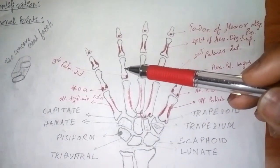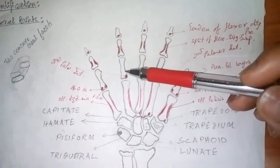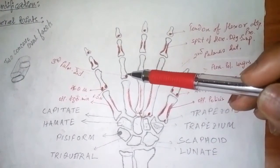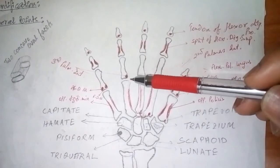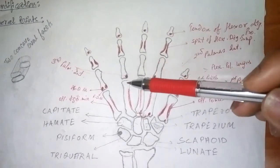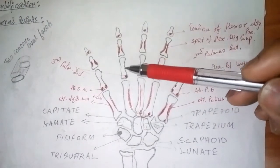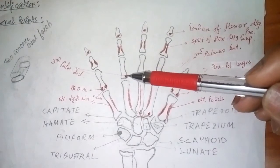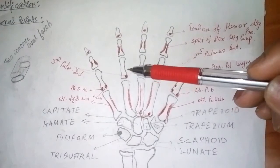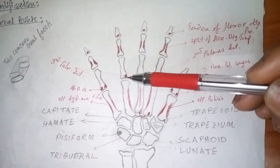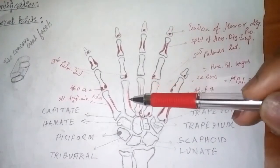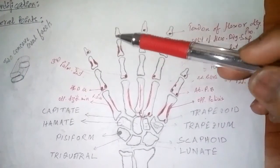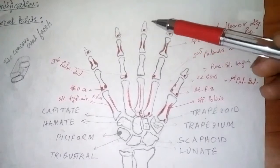As for the fourth digit, here is the insertion on the palmar surface at the base laterally — this is the insertion of the third palmar interosseous muscle, which originates from the fourth metacarpal bone. The remaining insertions are the same as the second digit.